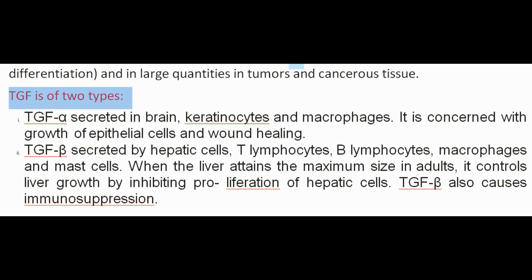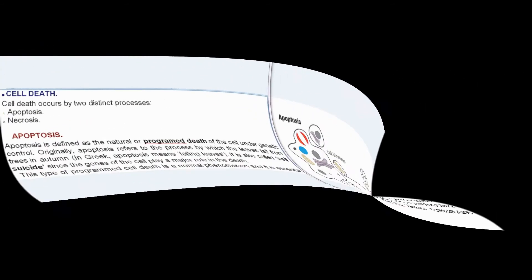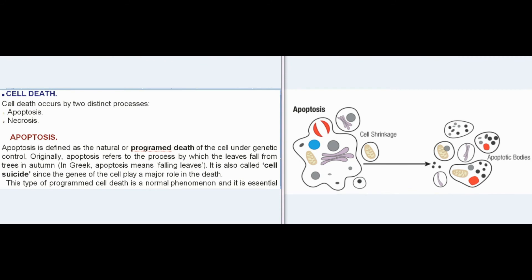TGF is of two types: TGF-alpha, secreted in the brain, keratinocytes, and macrophages, concerned with growth of epithelial cells and wound healing; and TGF-beta, secreted by hepatic cells, T-lymphocytes, B-lymphocytes, macrophages, and mast cells. When the liver attains maximum size in adults, TGF-beta controls liver growth by inhibiting proliferation of hepatic cells. TGF-beta also causes immunosuppression.